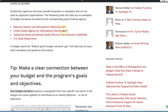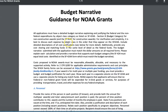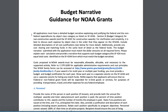In the last video I did for you, I shared some links that provide samples. Right now we're going through a National Oceanic and Atmospheric Administration sample that they have. If you go and check this out, you'll see a couple of things. All applicants must have a detailed narrative explaining and justifying the federal and non-federal expenditures, and they want this to be done by objective classification or categories.